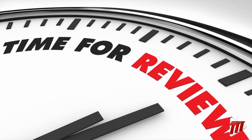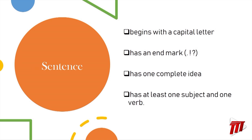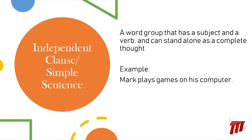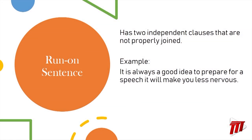In the first lesson, we were reminded that a proper sentence begins with a capital letter, has the appropriate end mark, has one complete idea, and has at least one subject. You also learned that an independent clause is a group of words that has a subject and a verb and can stand alone as a complete thought — for example, "Mark plays games on his computer." You also learned that a run-on sentence has two independent clauses that are not properly joined.